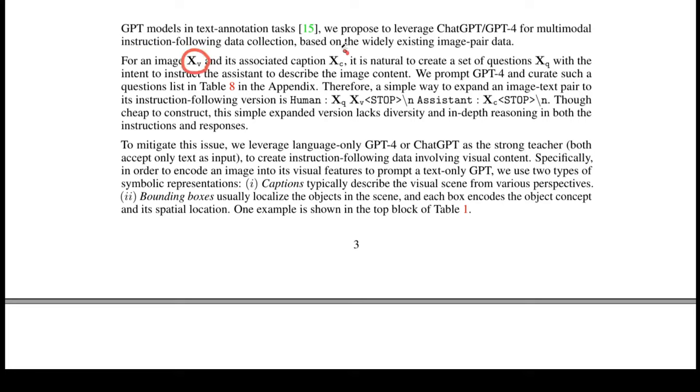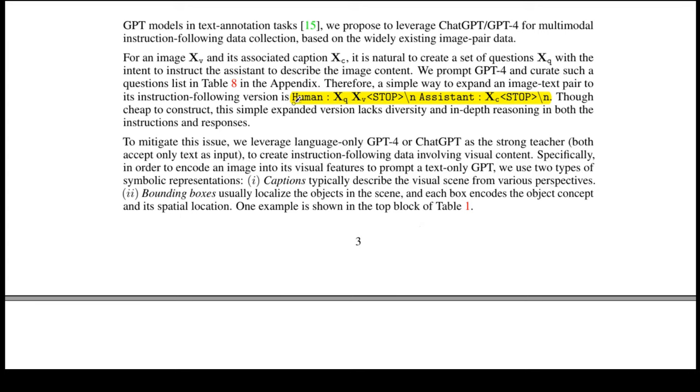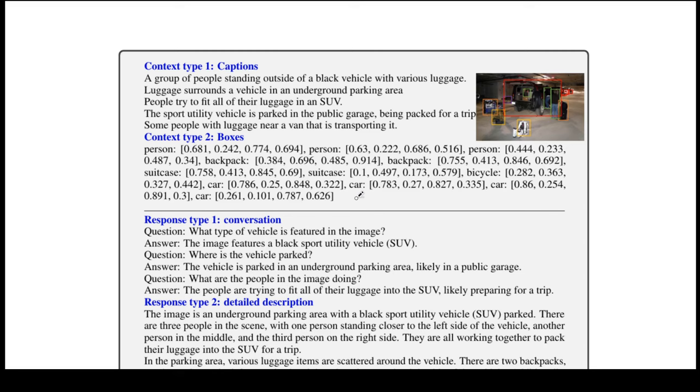Let's say we are given an image XV and its caption XC. We can create a set of questions which are similar to how humans will ask to describe an image. For example, all these instructions are variations to describe an image. For each of these questions, under a given image-caption pair, we can come up with a prompt similar to this. And this imitates a human instruction. But we can't do this for millions of images, as we will soon start lacking diversity. So to improve the diversity, we not only include captions as context in the prompts, but also the bounding boxes.